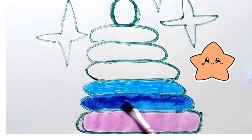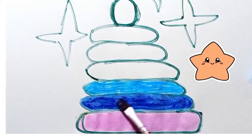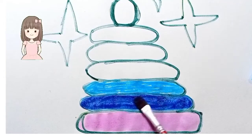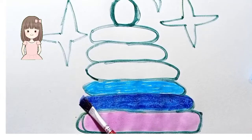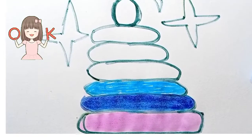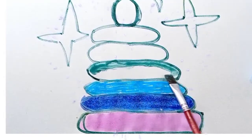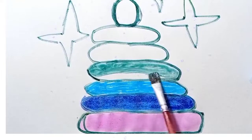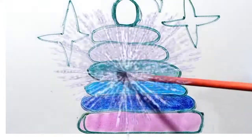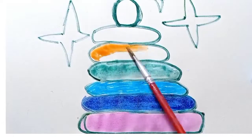Over in the meadow where the stream runs blue, lived an old mother fish and her little fishies two. Wings! said the mother. Wings! said the two. So they swam and they leaped where the stream runs blue.